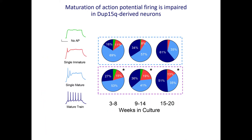In the Dup15Q-derived neurons, it's an intermediate phenotype. They actually show better development over time than the Angelman neurons but are not quite as mature as the control neurons. They show greater maturity at earlier stages in development and continue to show some developmental trends, but remain intermediate between the Angelman and control cells.